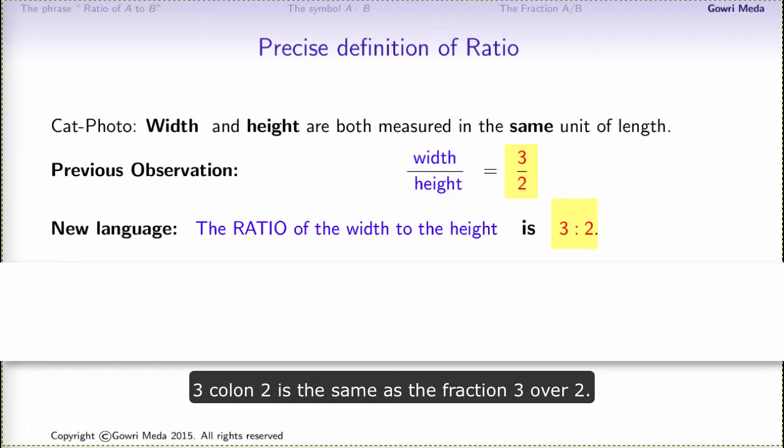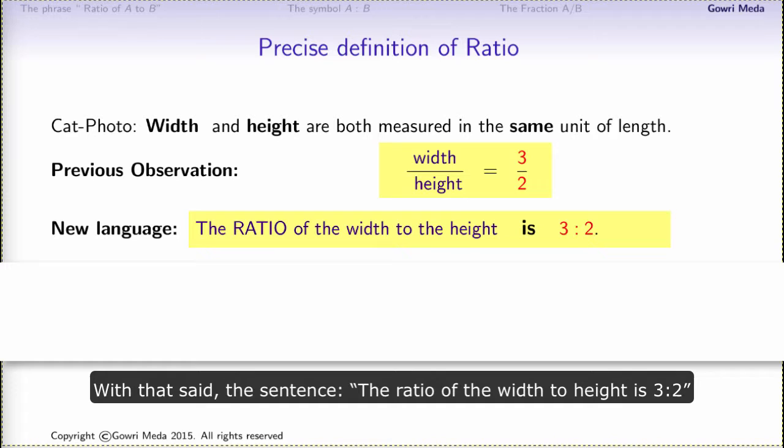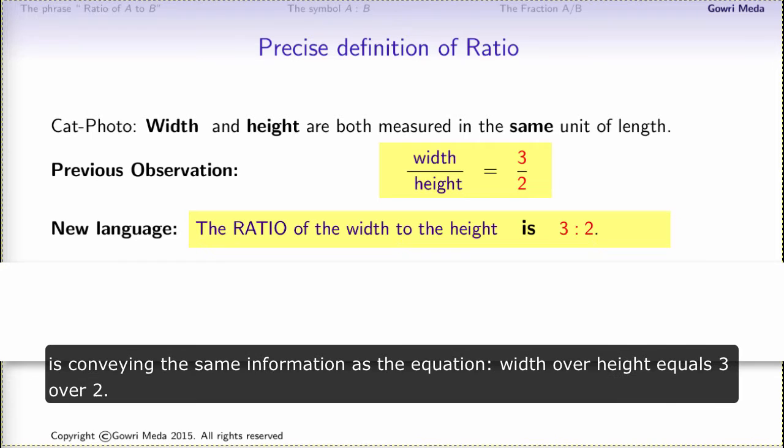Reiterating, 3 colon 2 is the same as the fraction 3 over 2. With that said, the sentence 'the ratio of the width to height is 3 to 2' is conveying the same information as the equation width over height equals 3 over 2.